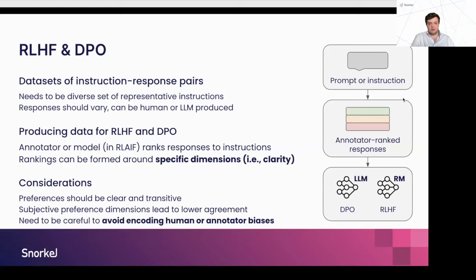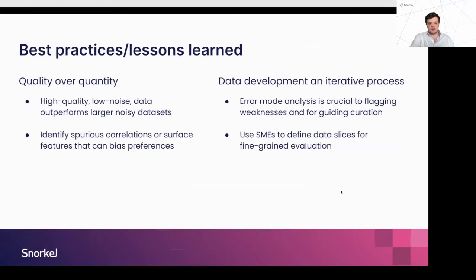For RLHF and DPO data requirements: diverse instructions remain very important. When defining preferences, it's important to have very clear dimensions you're assessing — using a specific dimension like clarity is better than asking annotators to pick which response is better across all dimensions. If a dimension is too subjective, you'll end up with a lot of noise. Having well-defined preference dimensions is the way forward for better preference datasets and better alignment outcomes. Where humans or models create rankings, it's also critical to avoid encoding human or model bias — for example, avoiding always preferring longer responses independent of content.